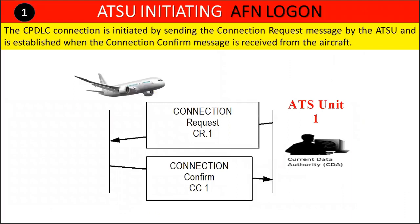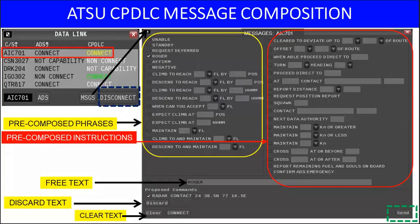AFN logon can also be performed by the ground air traffic service unit by sending a connection request message, and is established when the connection confirm message is received from the aircraft. ATC will select the flight to transmit CPDLC messages. A message window will appear where the controller has pre-composed phrases and instructions. The free text option is also available.